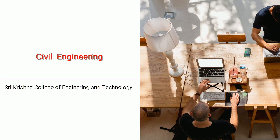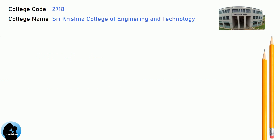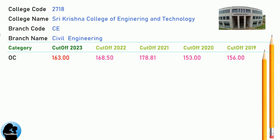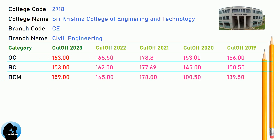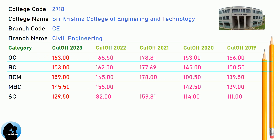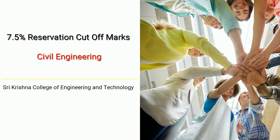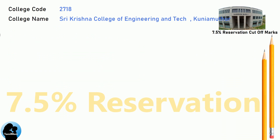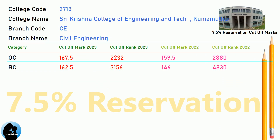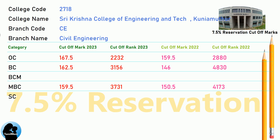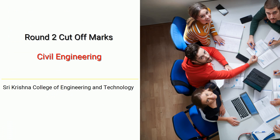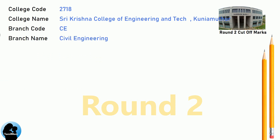DNEA Cut-Off for Shri Krishna College of Engineering and Technology in Civil Engineering. DNEA 7.5 Reservation Cut-Off. DNEA Round 2 Cut-Off for Shri Krishna College of Engineering and Technology in Civil Engineering.